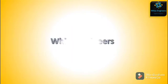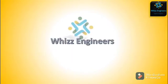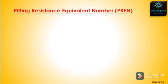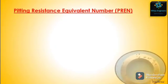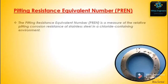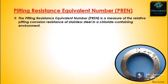Hello friends, welcome to With Engineers. Today we will learn about Pitting Resistance Equivalent Number, PREN. PREN is a measure of relative pitting corrosion resistance of a stainless steel in a chloride-containing environment.